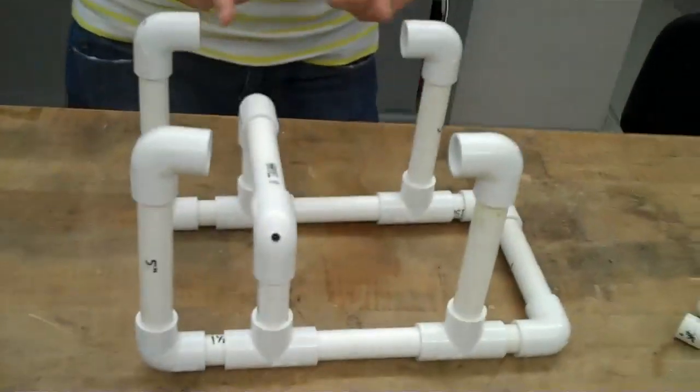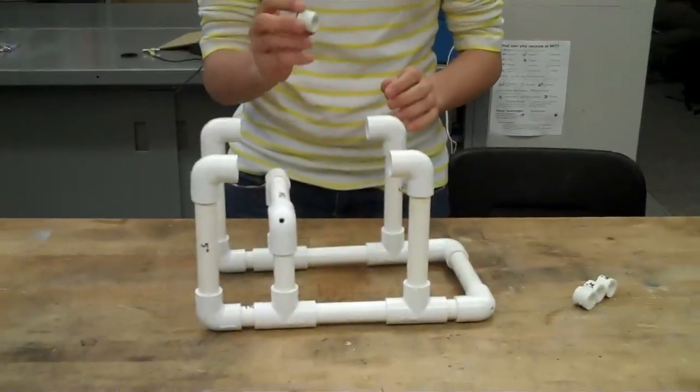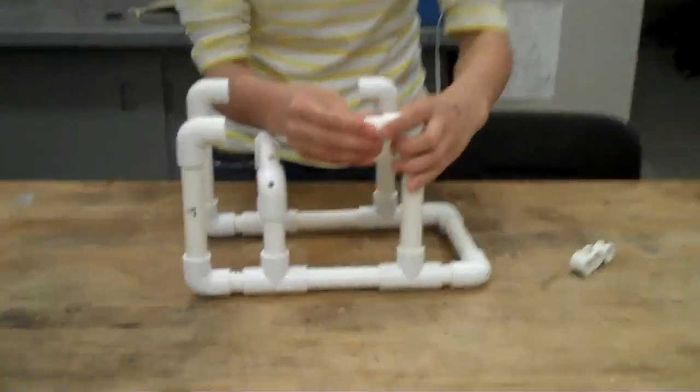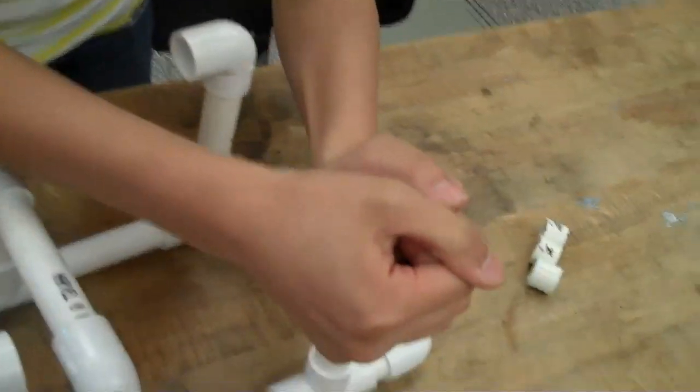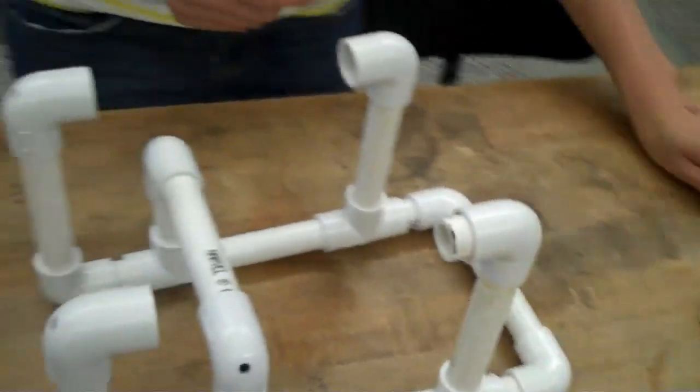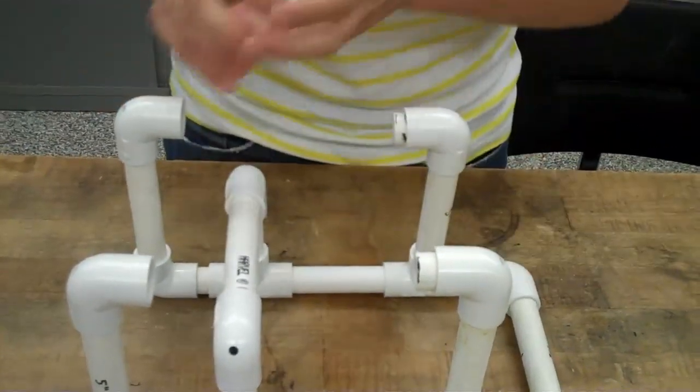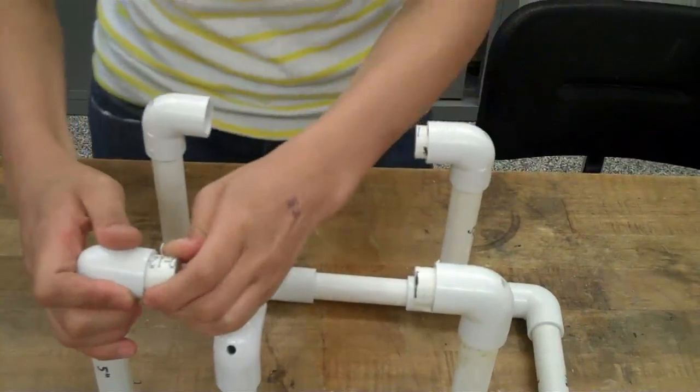Next, we'll have to insert the buoys. Now, the four remaining three-quarter-inch pieces, we're going to put them in the ends of this. We're going to put one in each end, and this will later hold the buoys that will help keep the sea perch float.